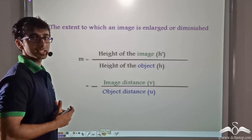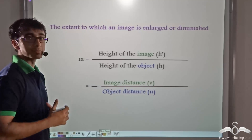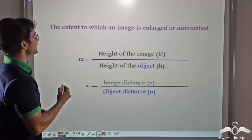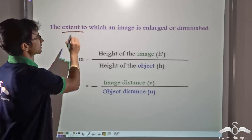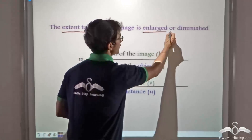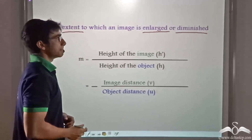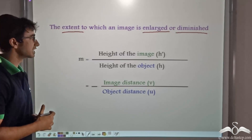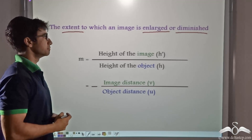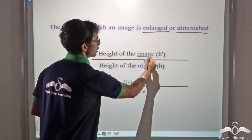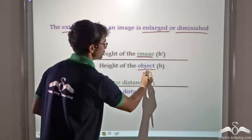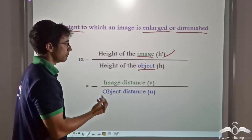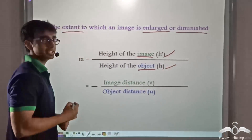The property by which your image is enlarged or diminished is known as magnification. That is, magnification is the extent to which an image is enlarged or diminished. Mathematically, magnification has a very simple formula. It is given by the ratio between the height of the image, that is h', to the height of the object, that is h.